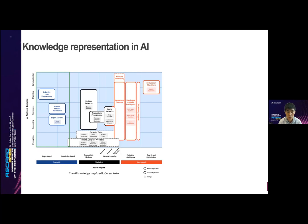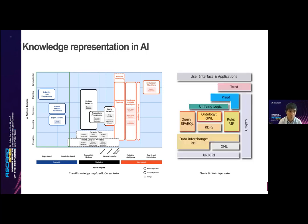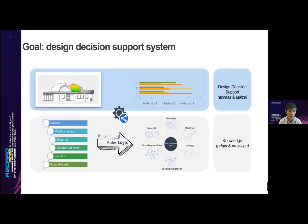The logic-based knowledge representation has been recognized as a symbolic top-down manner in the paradigm of artificial intelligence. Using the semantic web technology stack, the knowledge can be formalized with the web ontology language OWL and accessed through the query language SPARQL. It is also possible to exchange different rules using the unified rule exchange format. Our research goal is to establish a design decision support system based on formal knowledge in the BIM environment to assist architects and engineers to choose suitable AM methods.